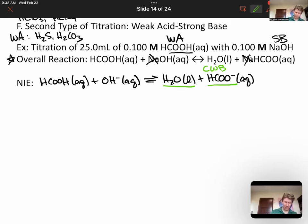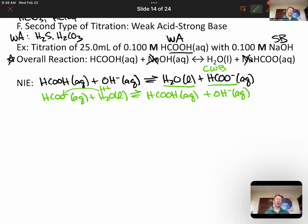If we were to turn this reaction around, it would be formate plus water goes to formic acid plus hydroxide. You remember that water is the other reactant in both Ka reactions and Kb reactions. This is a Kb reaction for formate ion. So if we want to know if this reaction goes to completion or not, we need to know what the Kb value is for formate.